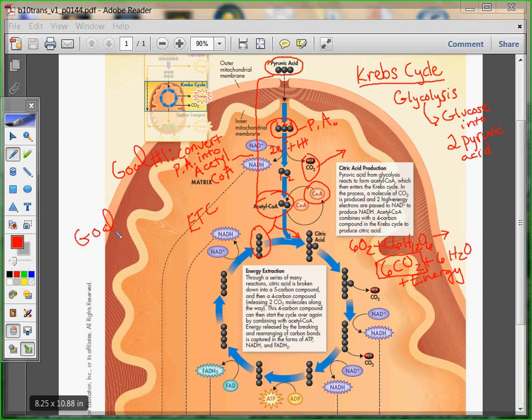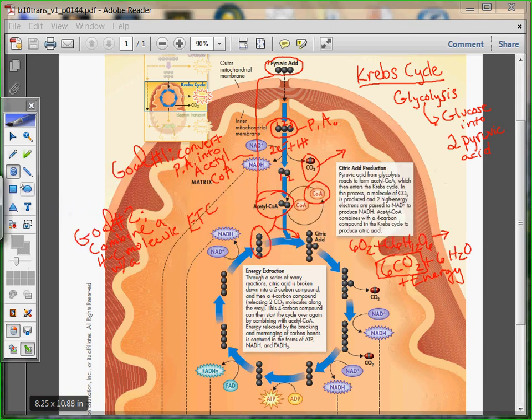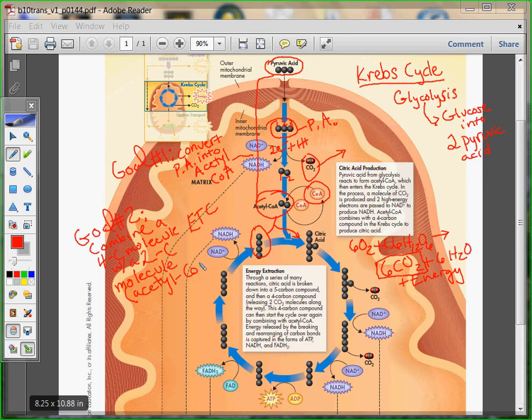You have two carbons plus four carbons will give you a six-carbon citric acid. We'll write over here, goal number two is to combine a four-carbon molecule with a six-carbon citric acid.